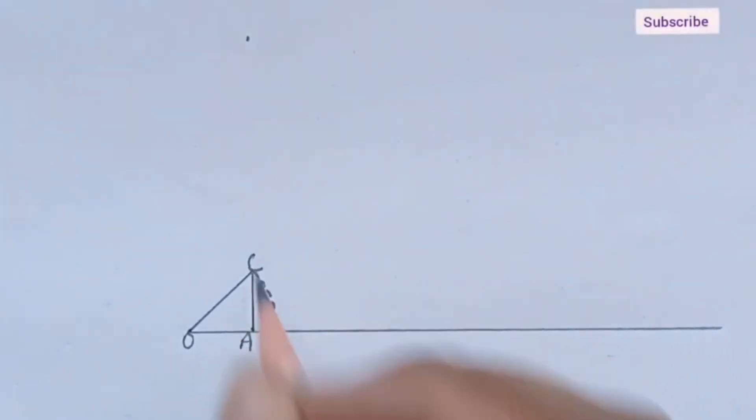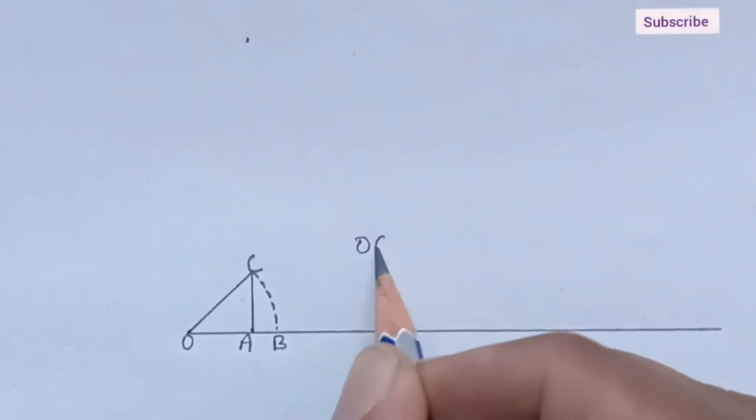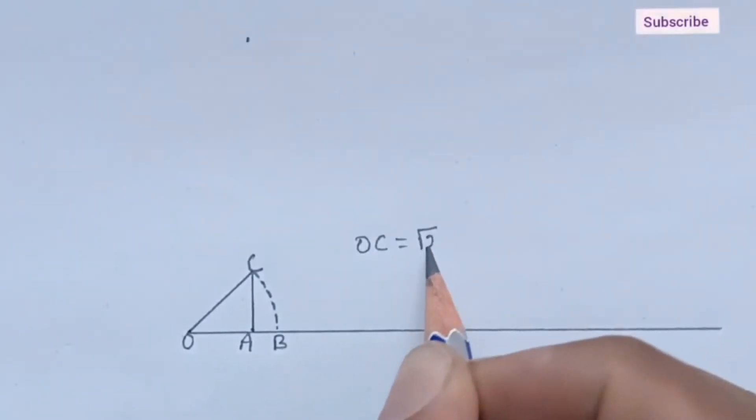So, our answer is triangle OAC. OC is under root 2. OB is under root 2.